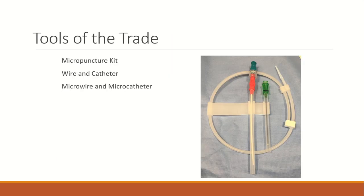Moving on to the procedure itself, the beginning step of any endovascular procedure is accessing the vessel with a micropuncture kit, pictured in this image. The micropuncture consists of a needle with a green top to provide initial access into the vessel, a wire encased in tubing to gain deeper access, and then a dilator with a red and blue top which replaces the needle to maintain access into the vessel. Either femoral or radial access can be used for hepatic embolizations. For more information on gaining access, check out our video on femoral access.